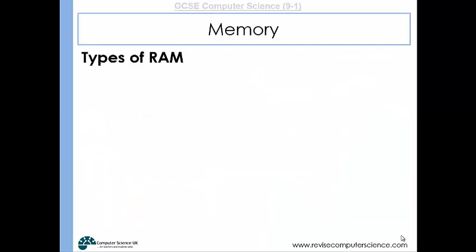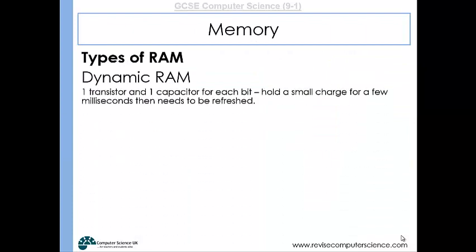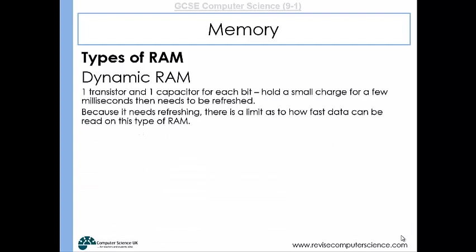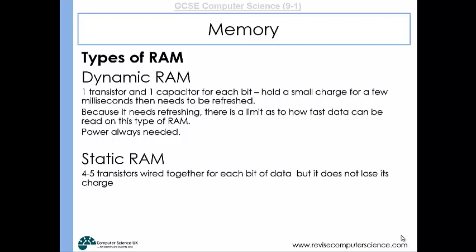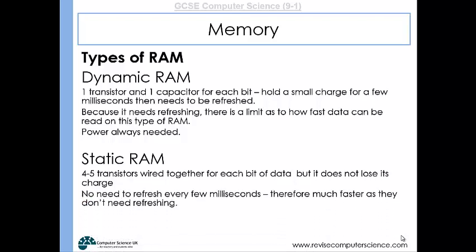There are different types of RAM. Dynamic RAM has one capacitor and one transistor, and it needs electricity running through it all the time — if it doesn't get refreshed every few milliseconds then the data will be lost. Static RAM uses many more transistors wired together and doesn't lose charge as quickly, so it doesn't need to be refreshed every few milliseconds. Static RAM is much faster but still needs a constant supply of electricity, and because it's newer technology it is very expensive.